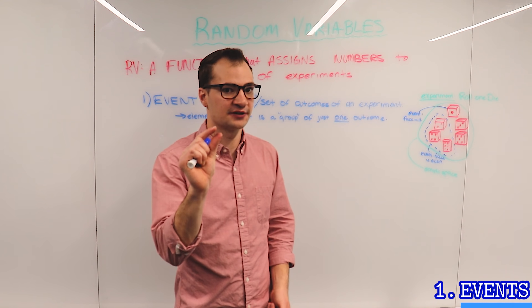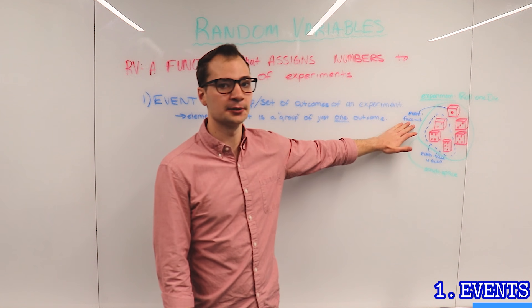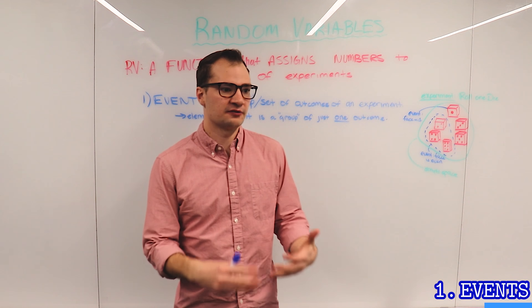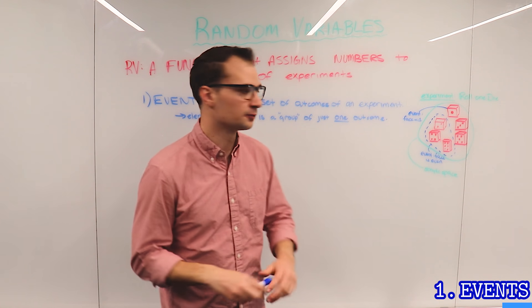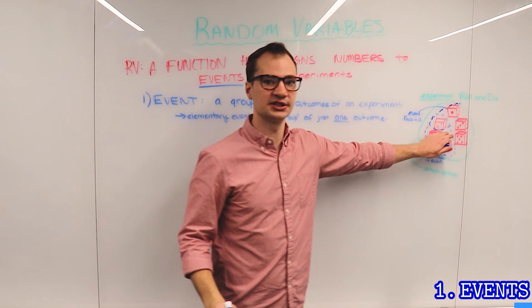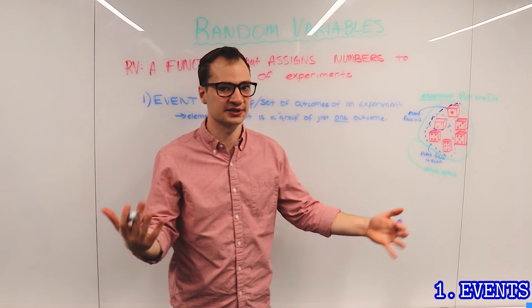If we're interested in the actual face value itself, we would do an elementary event. We could do an event in which the face value is less than 3. In which case, it would be just these two: a 1 or a 2 is less than 3. Now let's look at what it means to assign.